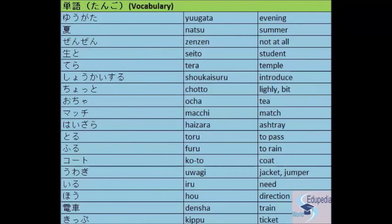Minasan, yokoso! Hi everybody, welcome to EdupediaWorld. We have come to lesson number 16. The title of this lesson is 'Tomodachi ni au' — 'Tomodachi' means friend, 'au' is to meet, so 'tomodachi ni au' means meeting a friend. In this video we will learn new vocabularies and grammar. You will come across some new kanjis in this vocabulary — just remember the readings; we will learn the stroke order and associated meanings in the kanji part of this lesson.